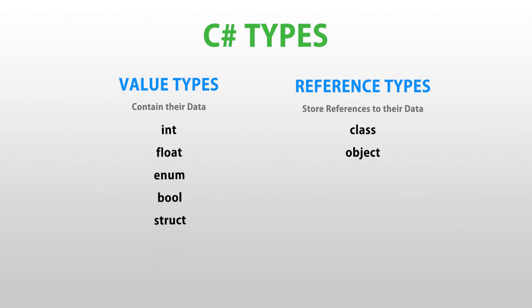So that's the most important thing to remember, especially when it comes to Unity DOTS, which is mainly based on structs and not classes. Arrays of simple types are also reference types, as are strings.